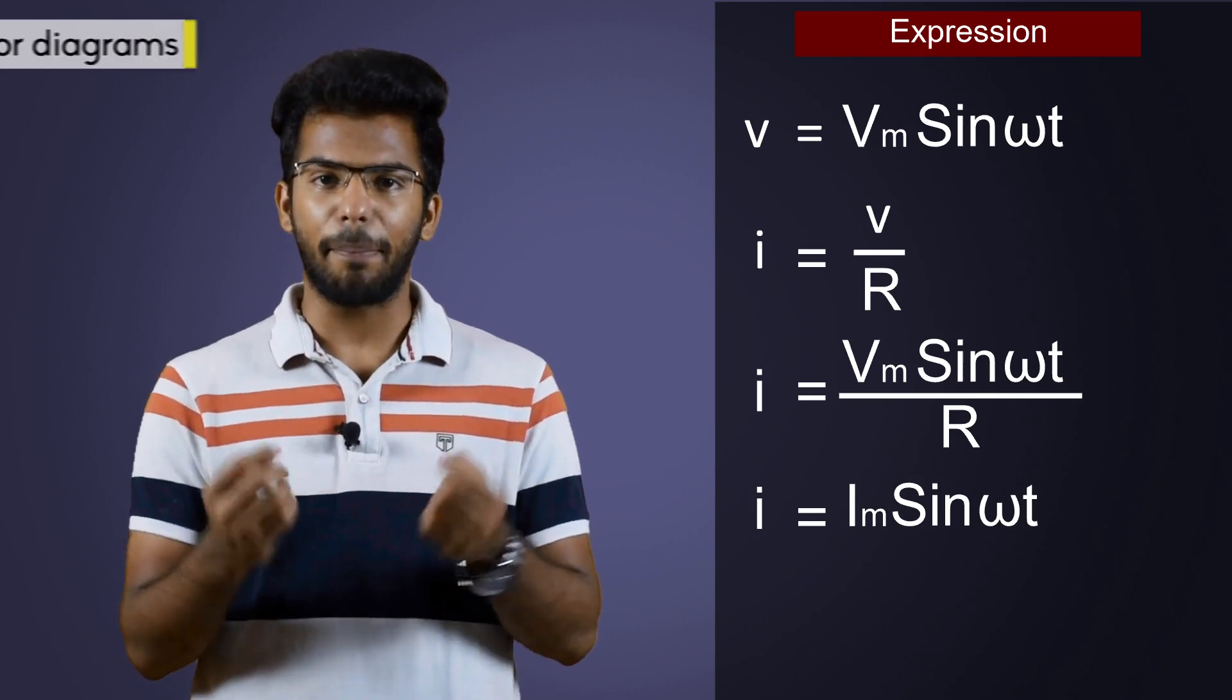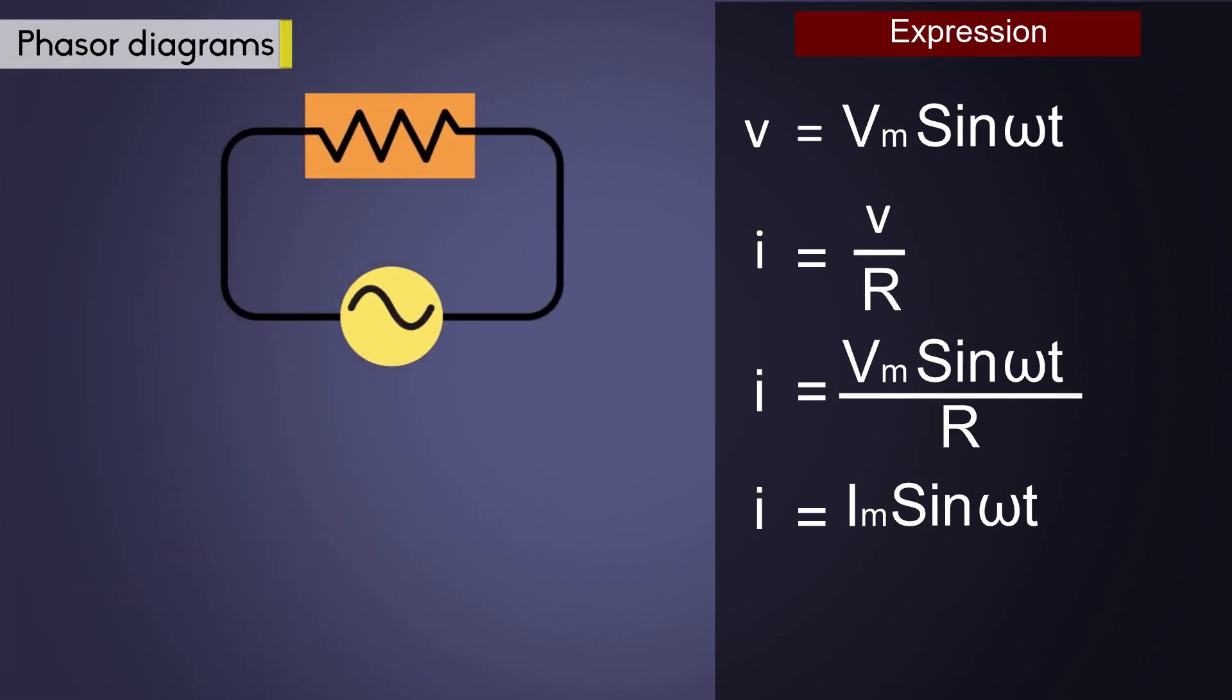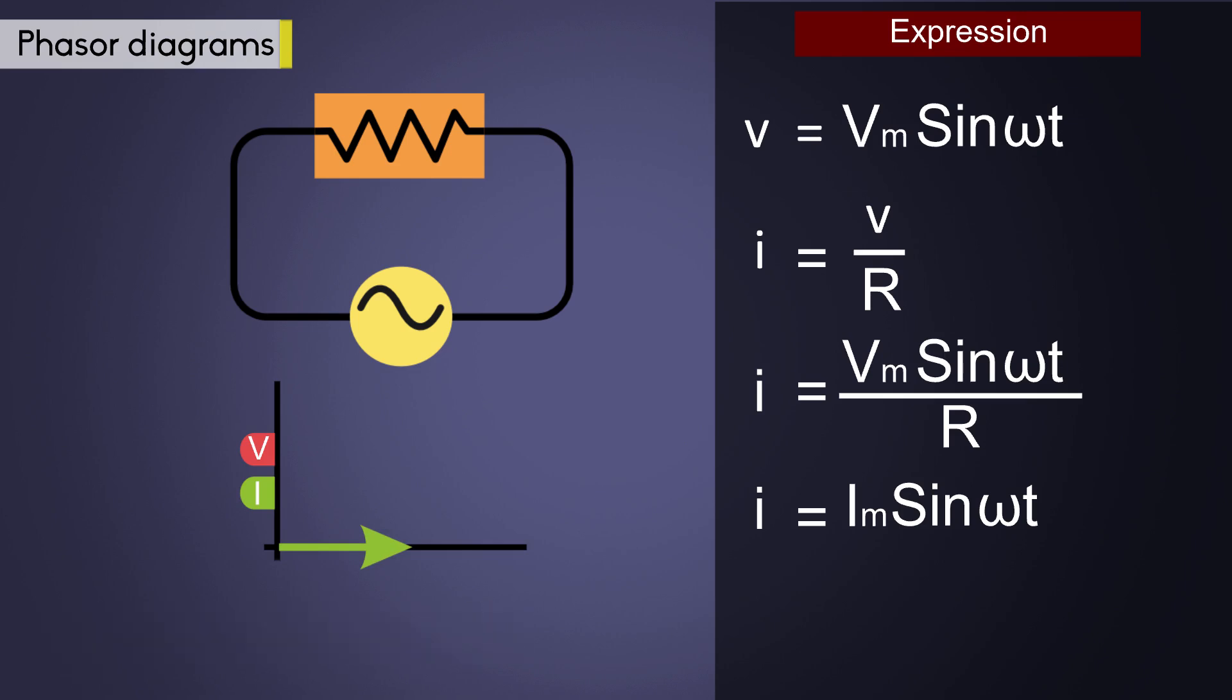These quantities can be represented in an easier way through phasor diagrams. Phasor represents the RMS values of the voltage and current quantities unlike a vector which represents the peak or maximum values. Dividing the peak value by root 2, the corresponding voltage-current phasor relationship can be represented like this. Both the lines are in sync.